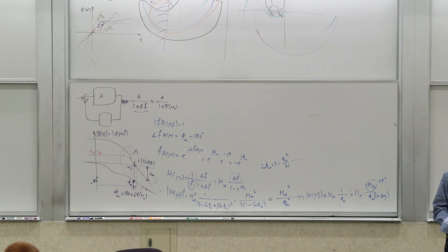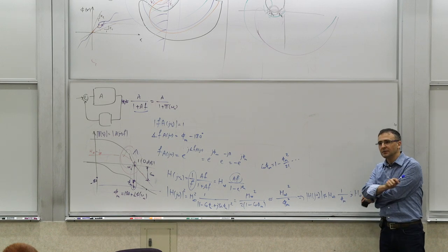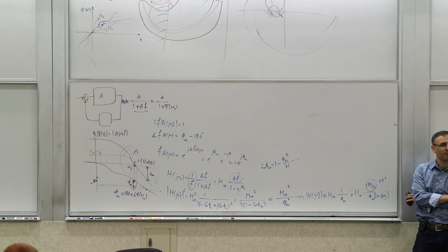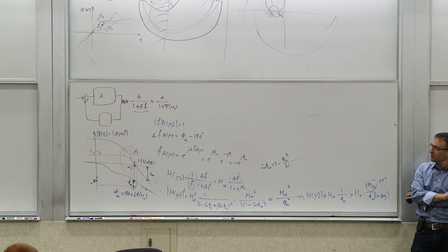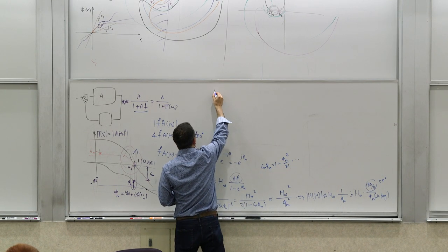So if you have a phase margin of, let's say, 55 degrees, 60 degrees, then the peaking is not going to be large. Because the amount of peaking that you get is close to a factor of 1. But as your phase margin becomes smaller, you get more and more peaking, which also means that in time domain, the response is going to be more and more underdamped.